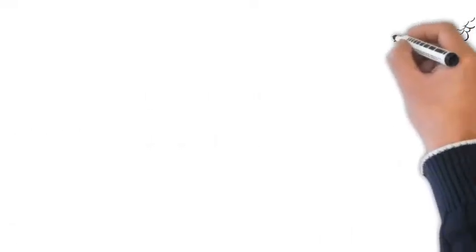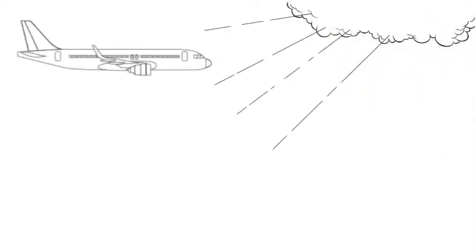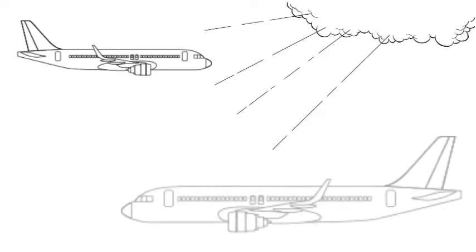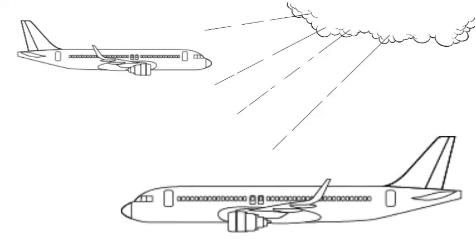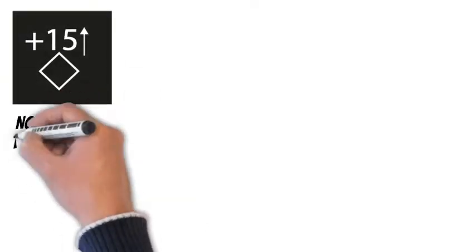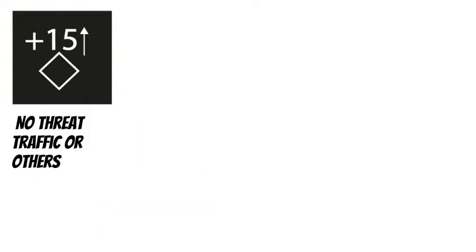These days, within A320 fleets, you may deal with two types of TCAS systems. The older one is without Autopilot Flight Director TCAS, and the newer one with AP/FD TCAS. Regardless of the system type, there are four levels of warnings. Number one: No Threat Traffic or Others, only displayed on the Navigation Display, ND, with no oral warning.